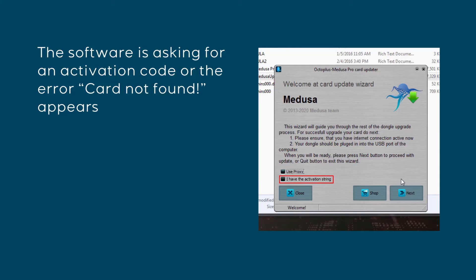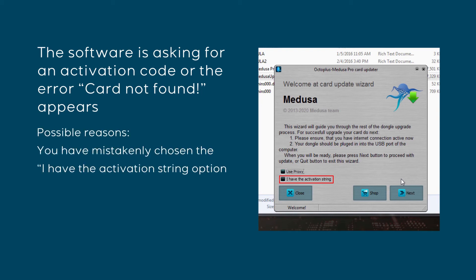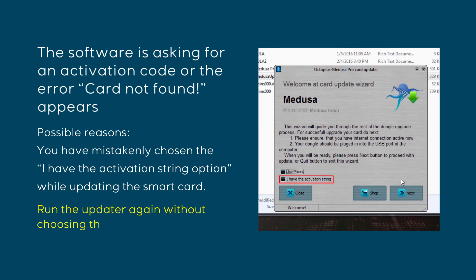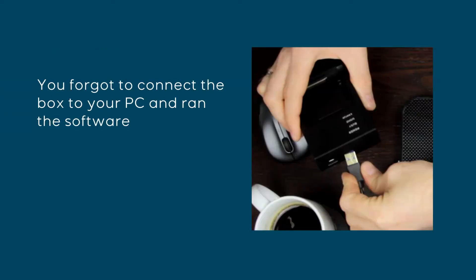Possible problems and troubleshooting: The software is asking for an activation code, or the error 'card not found' appears. Possible reasons: You have mistakenly chosen the 'I have the activation string' option while updating the smart card. Run the updater again without choosing this option. You forgot to connect the box to your PC and run the software.